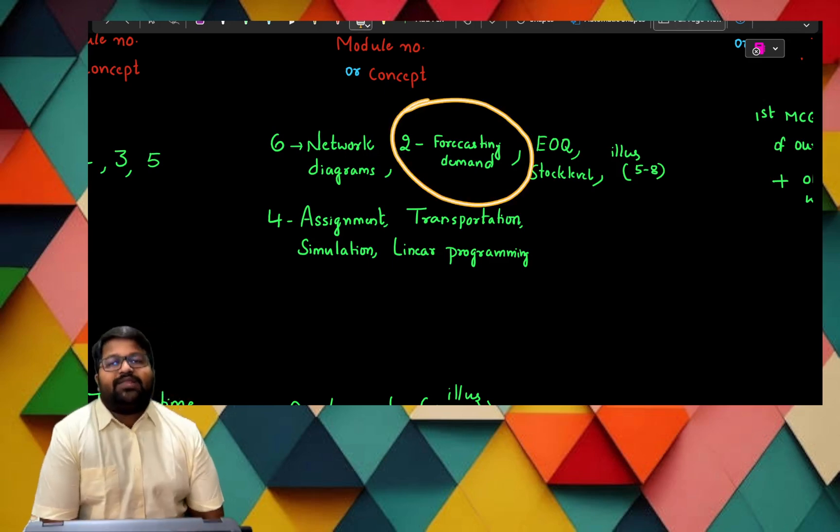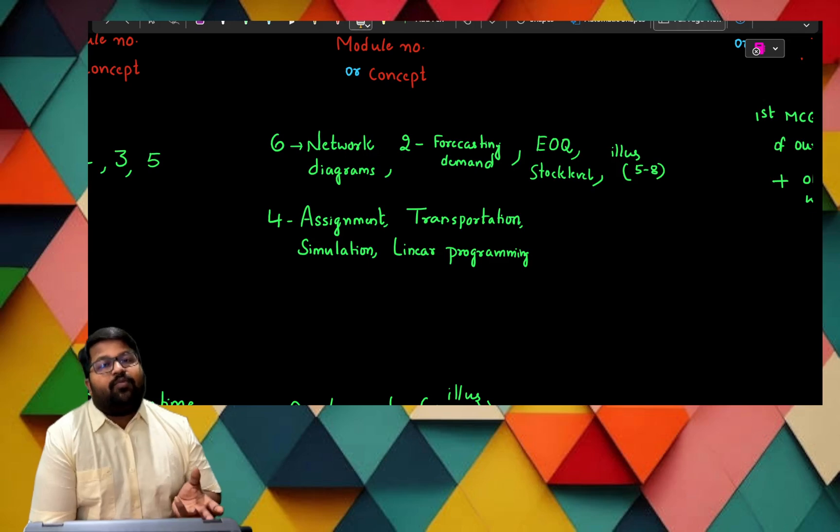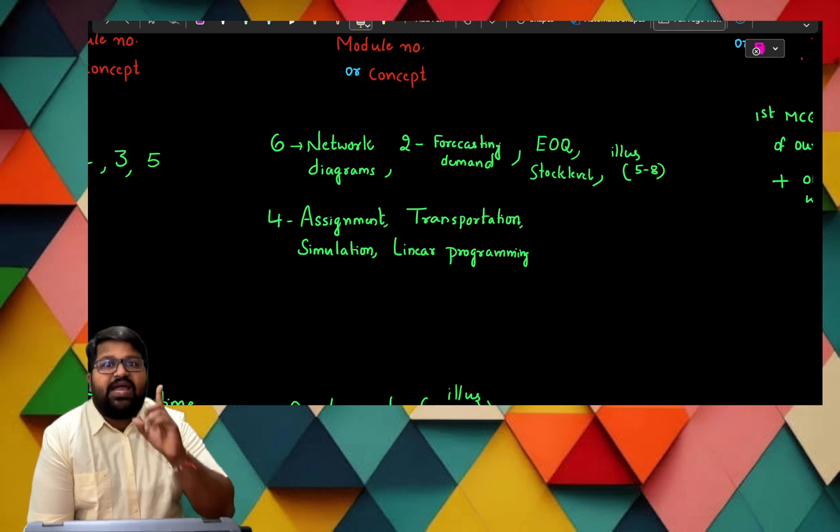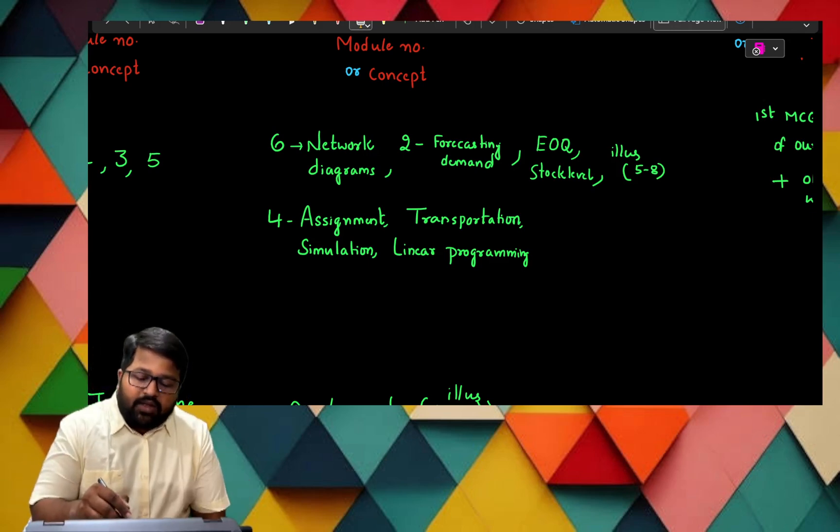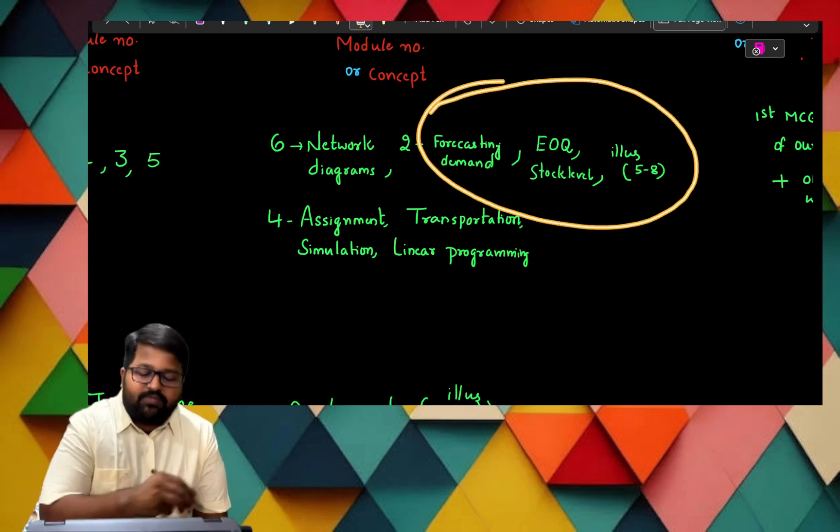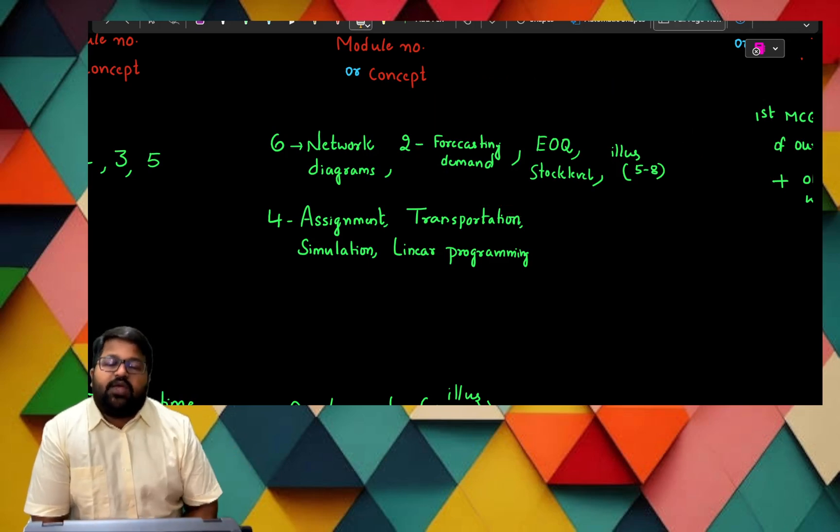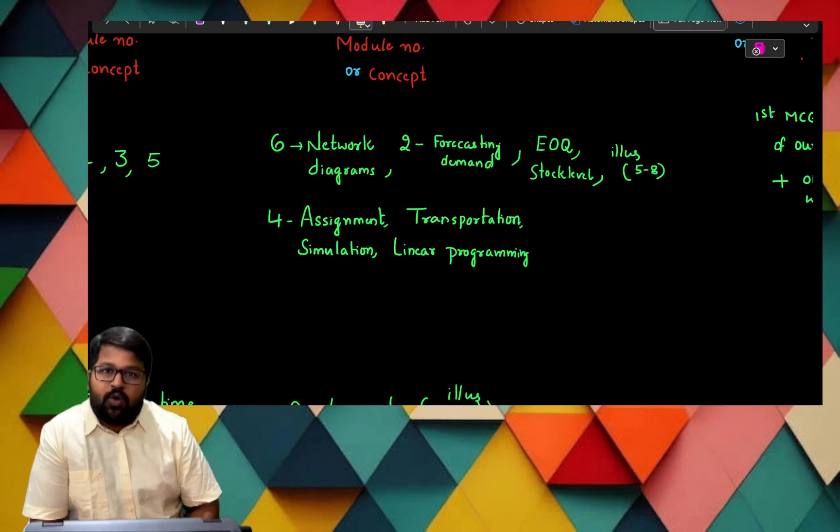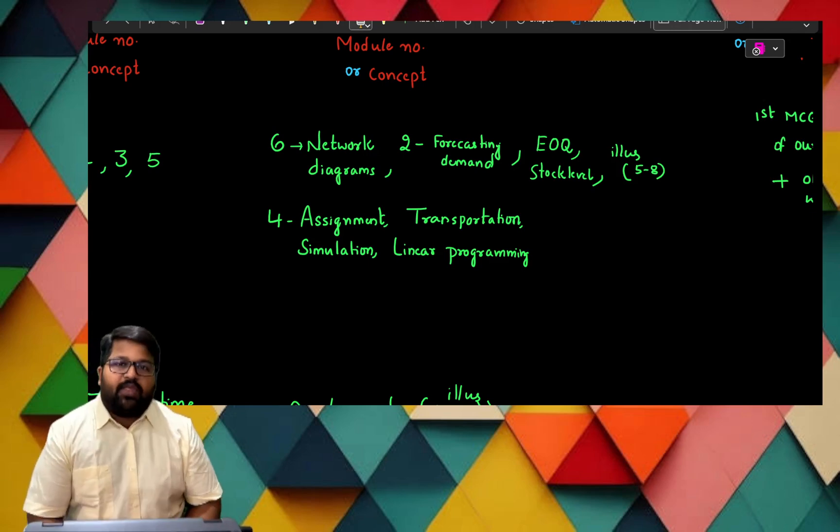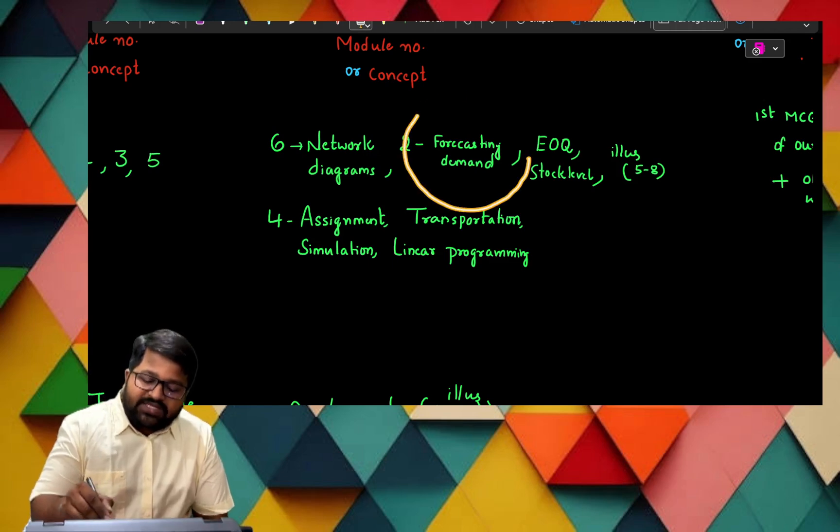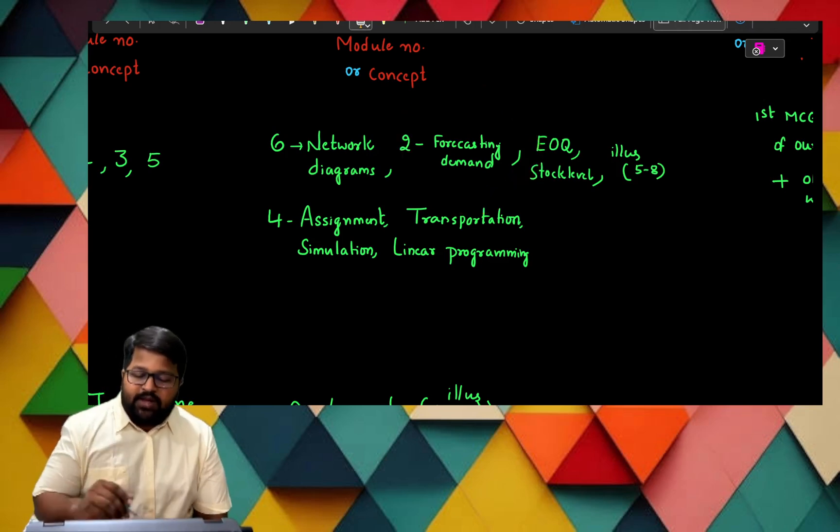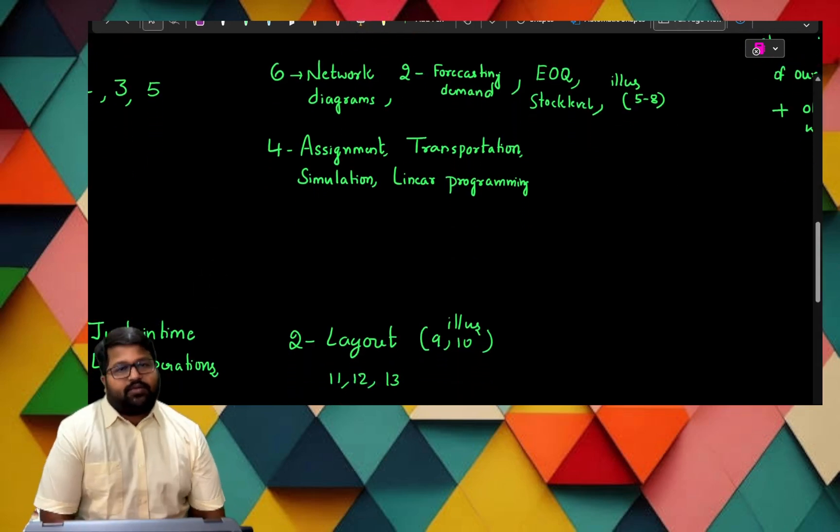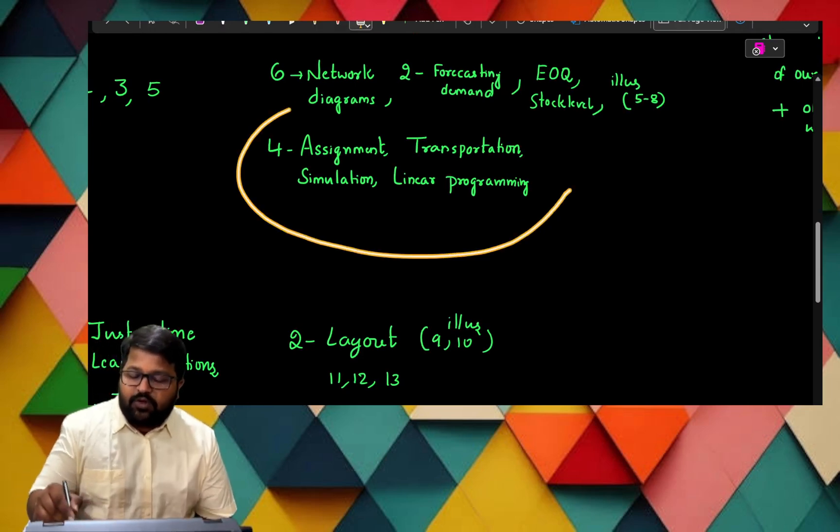Next we go with the second module. In the second module, we are giving importance to practical part. Practical part is A category. In the practical part, there are many problems from this, different types of concepts. We calculate here Economic Order Quantity, we calculate here breakeven point, and also here there is forecasting of demand. This is most important.